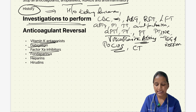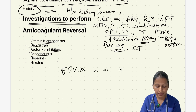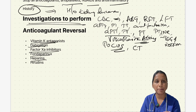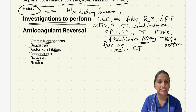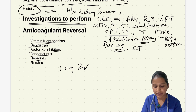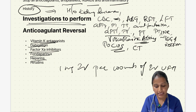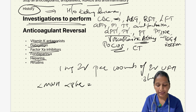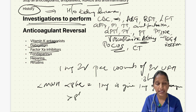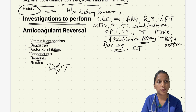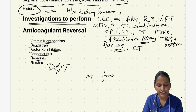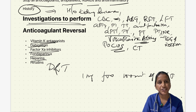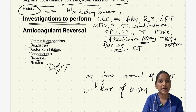For fondaparinux, evidence supports recombinant factor VIIa at 90 mcg/kg IV. For heparin reversal, protamine sulfate is given at 1 mg IV per 100 units of unfractionated heparin administered in the past 3 hours. Protamine does not completely reverse LMWH: for enoxaparin taken within 8 hours, give 1 mg per 1 mg enoxaparin; if more than 8 hours ago, give 0.5 mg per 1 mg. For dalteparin and tinzaparin, give 1 mg per 100 units; if APTT remains deranged after 4 hours, a second dose of 0.5 mg per 100 units can be given.